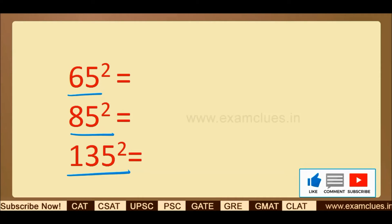If you ask me the answers, the first answer is 4225, second answer is 7225, third answer is 18225. So how can I answer those so quick?